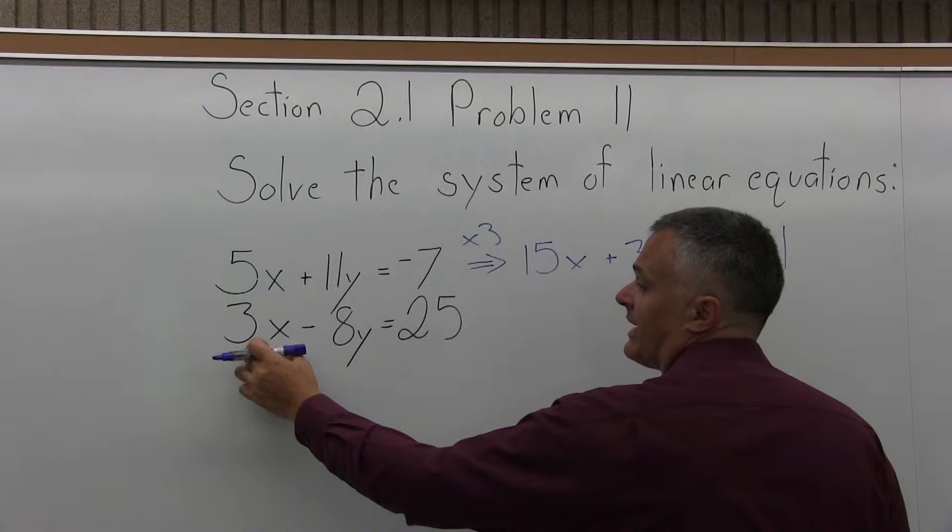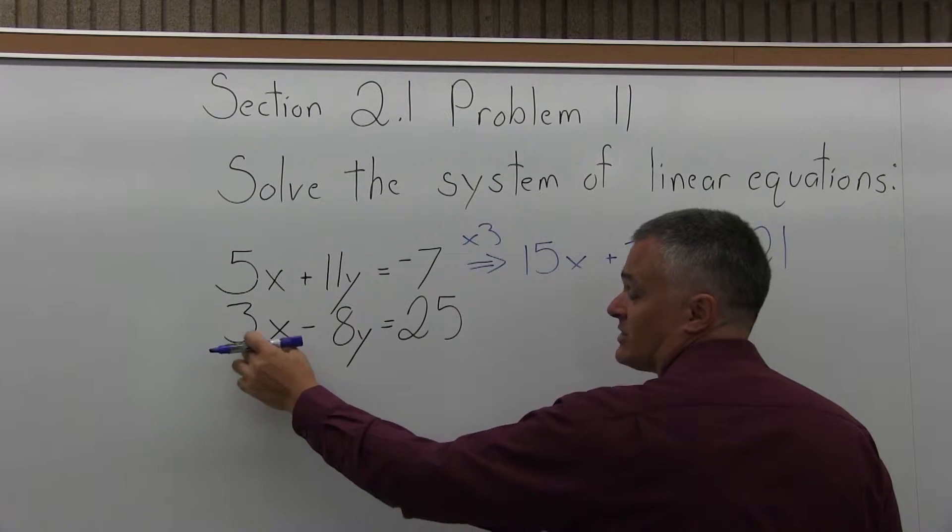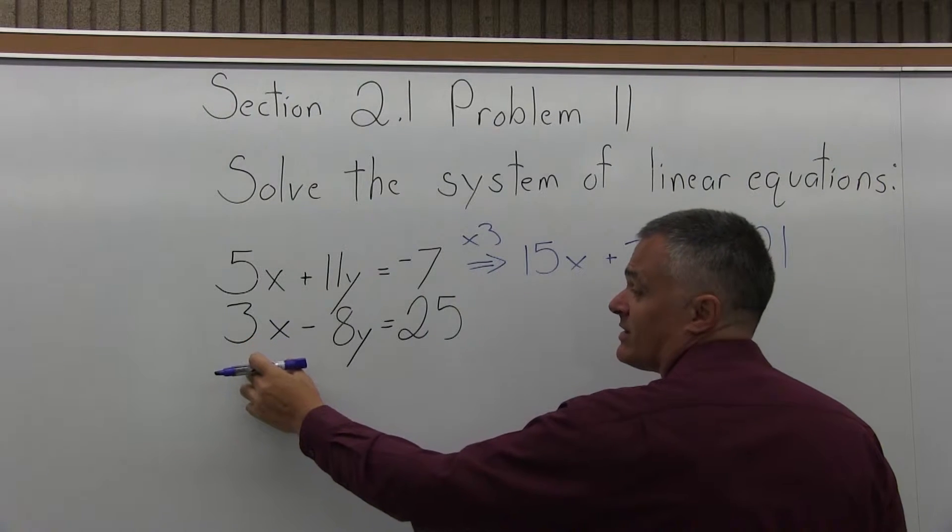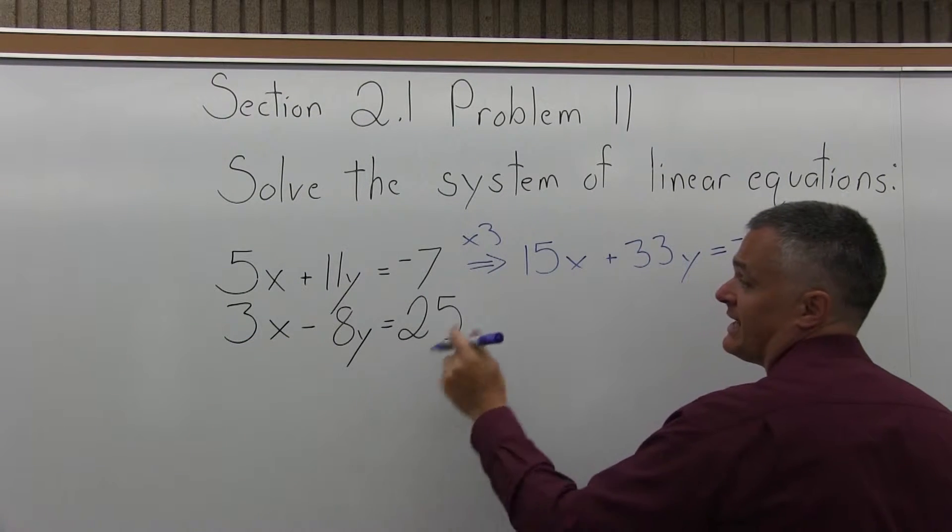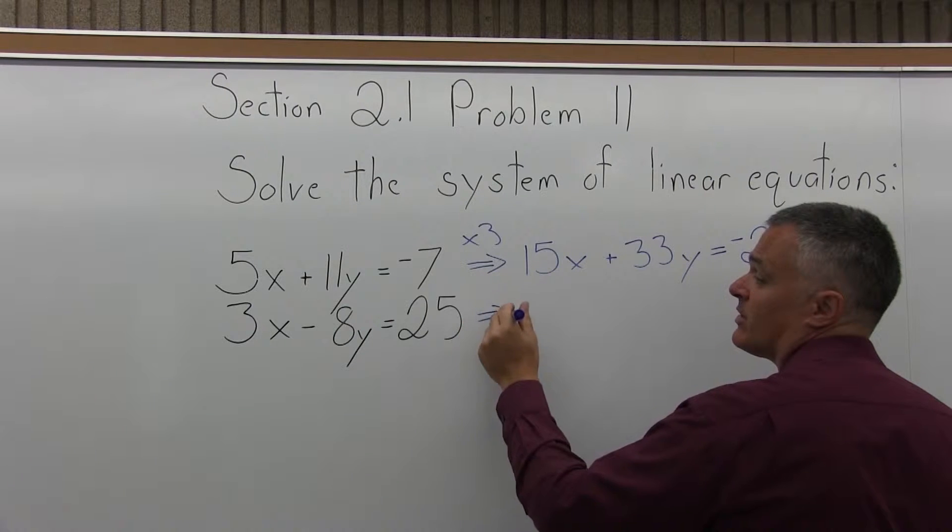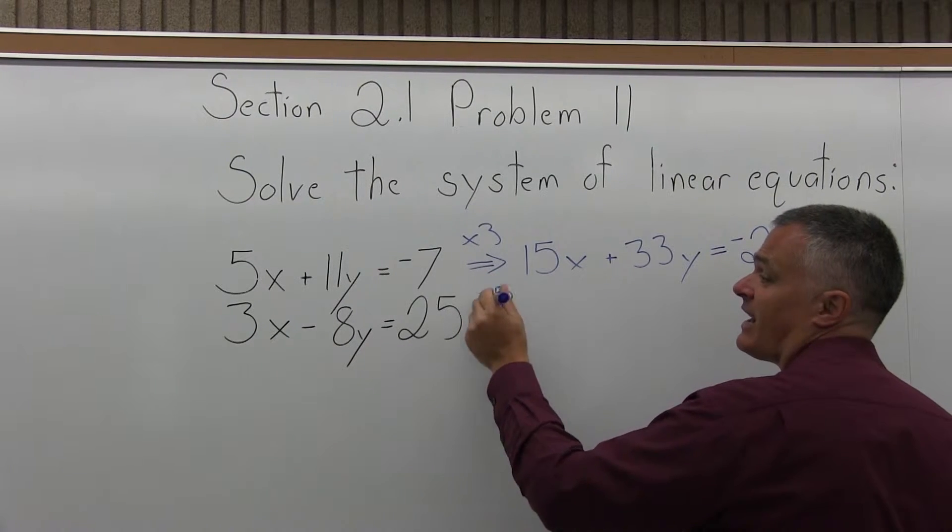And this one needs to become a negative 15x. So it's a 3x now. I want it to be a negative 15x. So everything in that bottom equation is going to get multiplied times negative 5.